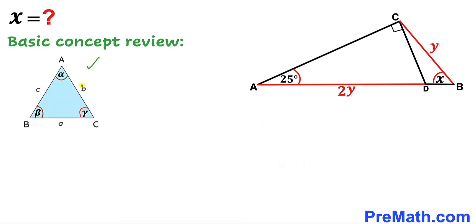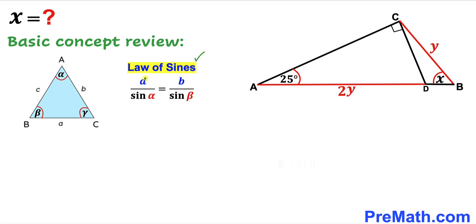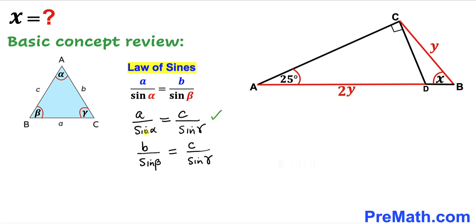Now let's consider triangle ABC with vertices A, B, and C. Vertex A has angle alpha, B has angle beta, and C has angle gamma. The side opposite vertex A is lowercase a, opposite B is lowercase b, and opposite C is lowercase c. By the law of sines: a/sin(alpha) = b/sin(beta) = c/sin(gamma).